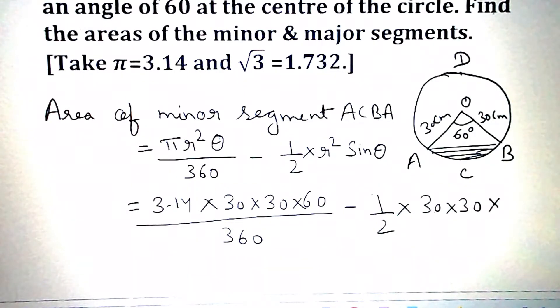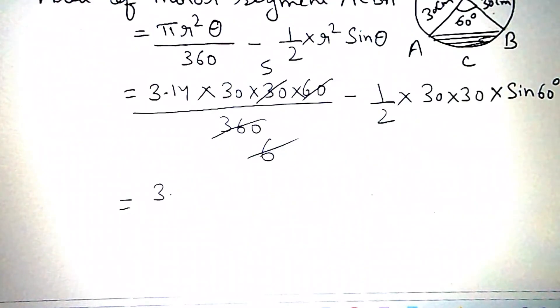3.14 into 150 minus 900 by 2 into value of sine 60 degree is root 3 by 2.